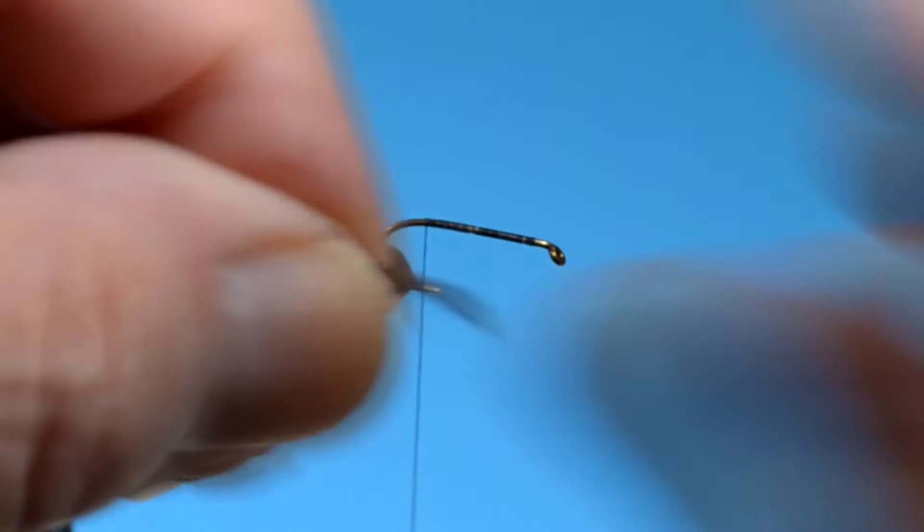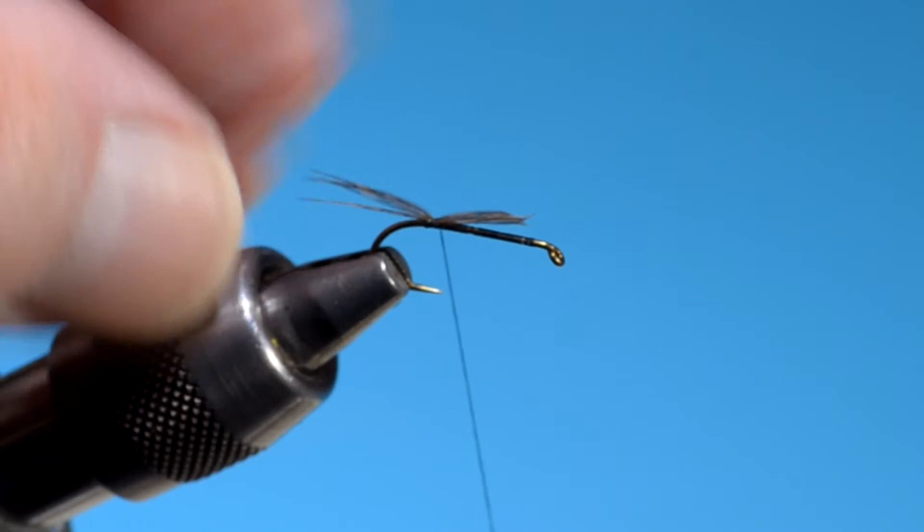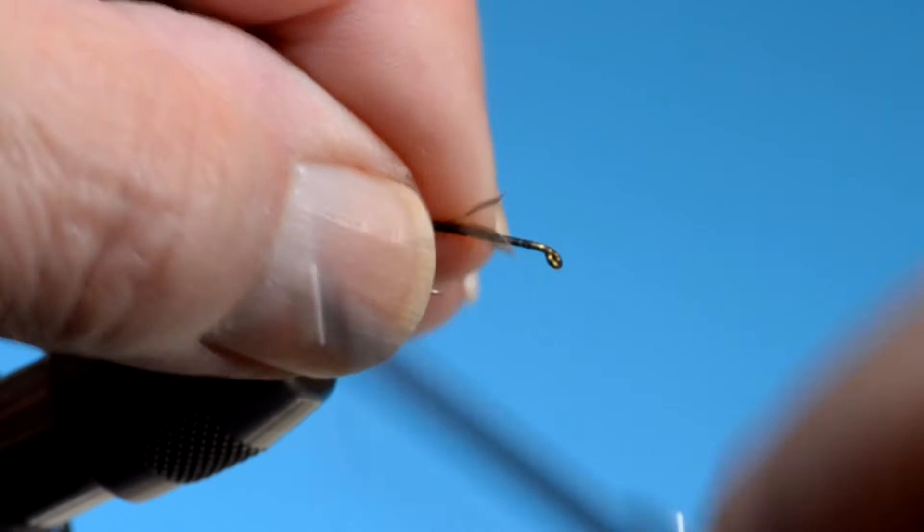And this is some mottled hen back, I think from India or someplace. I don't know where I got this. Don't tie a big long tail on this one. Try to keep it shank length.